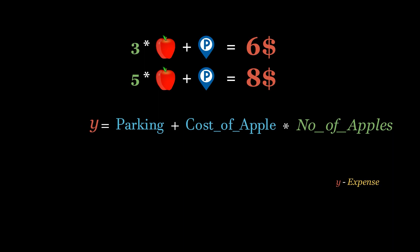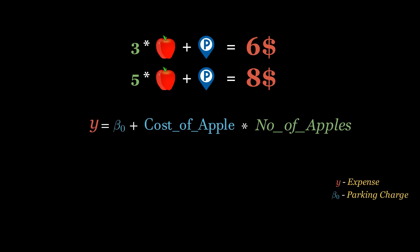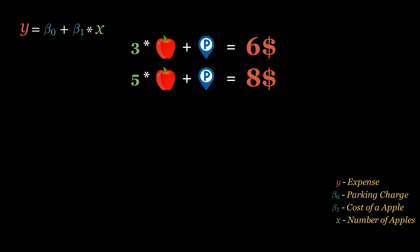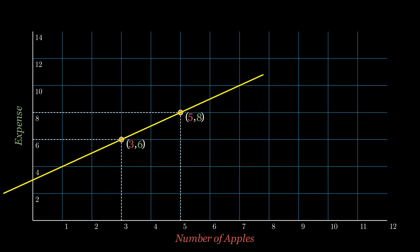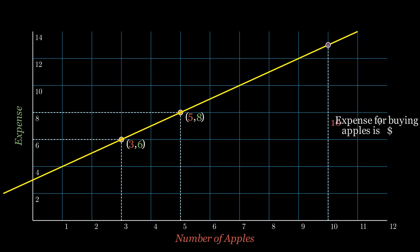Very simple, right? The main idea was to give you an overview of the symbols we are going to use. The model is basically the line that goes through the data points, and once we have the model, we can quickly predict the outcomes for unseen values.